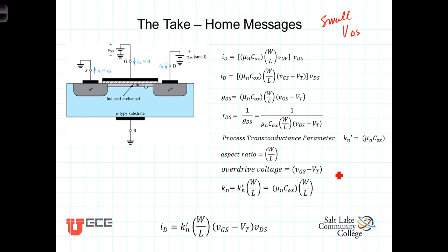We've already talked about the overdrive voltage. And then finally, yet another term, this k sub n, which consists of all of the physical parameters of the transistor, or the mobility times the capacitance times the aspect ratio. And finally then, we can write the current expression in terms of k sub n prime.